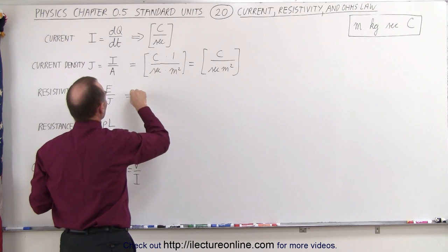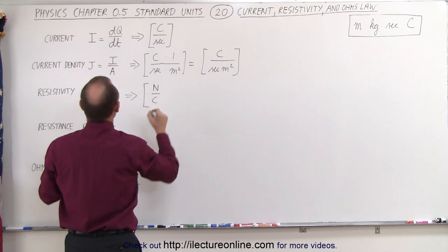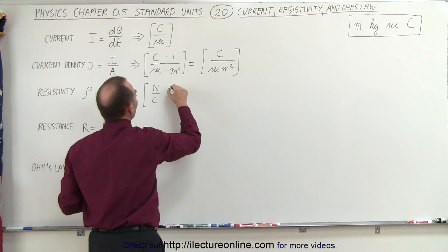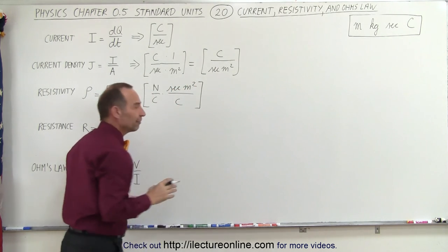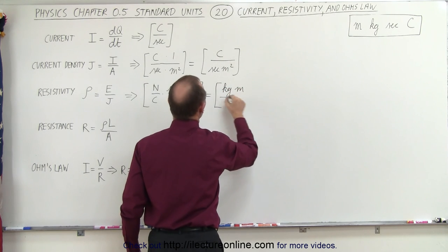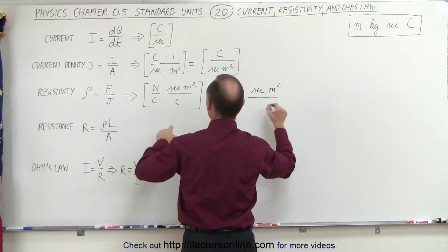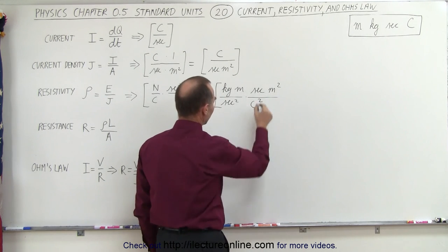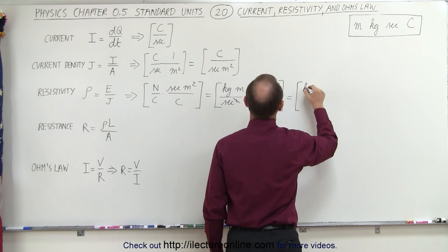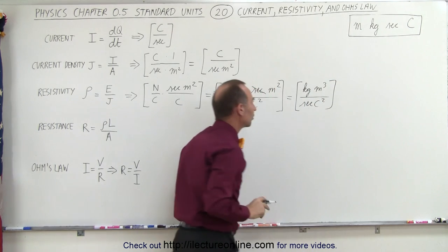The units for resistivity — we're simply giving the units here, not an equality. Electric field has units of Newtons per Coulomb, and since we're dividing by current density, we take the inverse of that: seconds meters squared per Coulomb. To define that further, we convert Newtons to kilograms meters per second squared. We have seconds and meters squared in the numerator, and Coulombs squared in the denominator. Simplifying — one second cancels and meters combine — gives us kilograms meters cubed divided by seconds times Coulombs squared. Those are the basic units of resistivity.